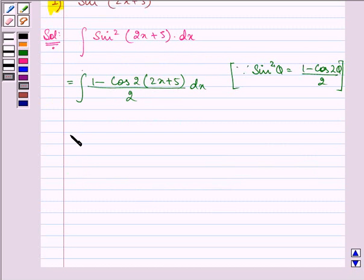We have split the numerator and we have 1 by 2 minus cos 2, 2x plus 5 divided by 2 dx.